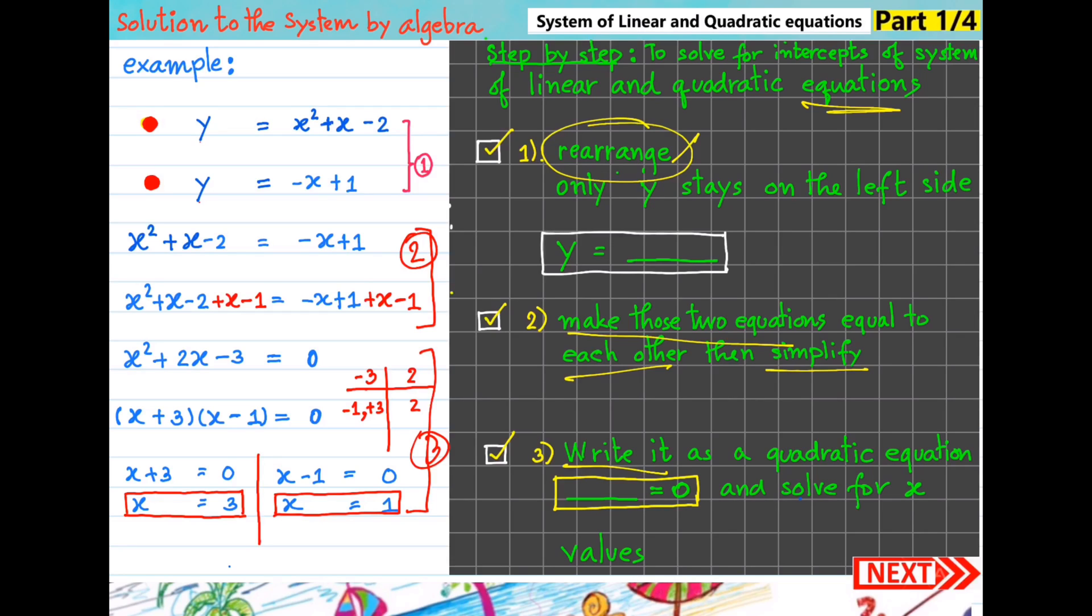The first one, rearrange it - just only y stays on the left side and the remaining stays on the right side. Then, as we take a look at example we have here, we have x squared plus x minus 2 equals minus x plus 1. Then we eliminate minus x and eliminate plus 1 by plus x, then minus 1.